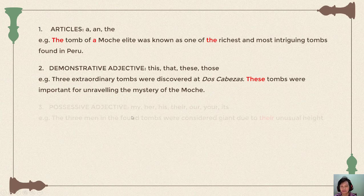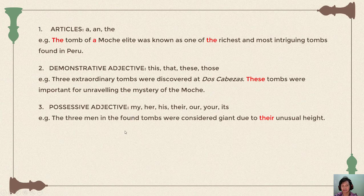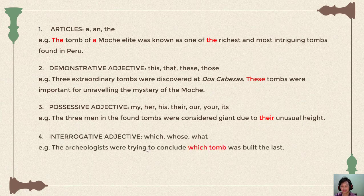The next type is possessive adjectives. Similar to possessive pronouns, but we use the adjective form because it introduces a noun. We have: my, her, his, their, our, your, and its. Example: 'The three men found in the tombs were considered giants due to their unusual height.' Here 'their' refers to the three men, and it introduces the noun 'height'.